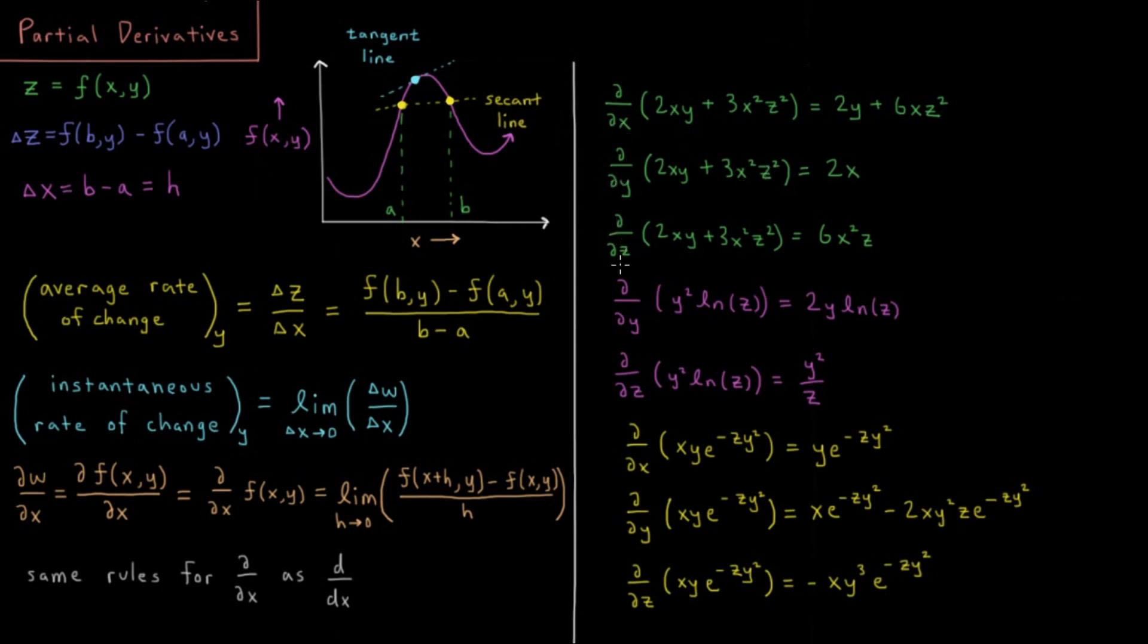With respect to z, we have 2xy with no z there, so that gives us zero. And 3x squared z squared—the partial derivative of z squared is 2z, giving us 6x squared z.